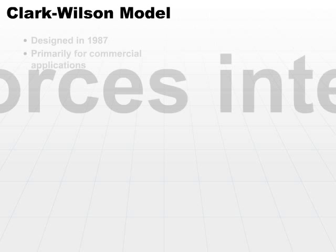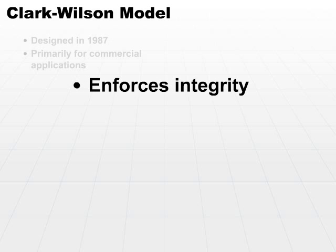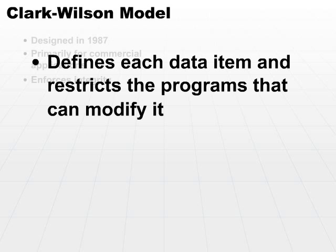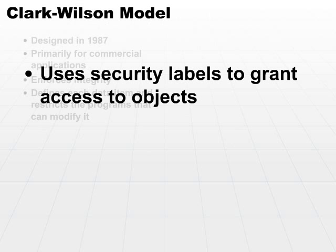Similar to the Biba model, it enforces integrity, but in a different way. Instead of being designed on the concept of a state machine, it defines each data item and then restricts the programs that can modify it. Access to a data item is restricted through the programs that are legal or authorized to modify it. Security labels are used to grant access to those objects, and by constraining programs that can modify data, it reduces the possibility that a rogue program can get in and change the data and destroy integrity.